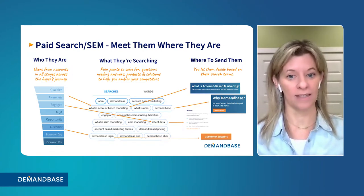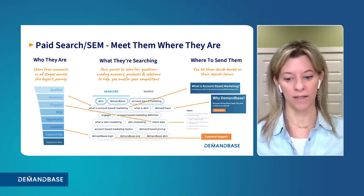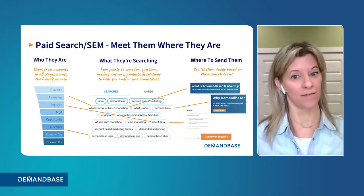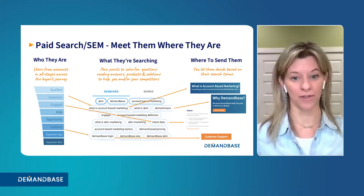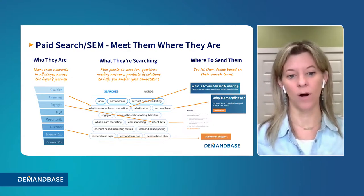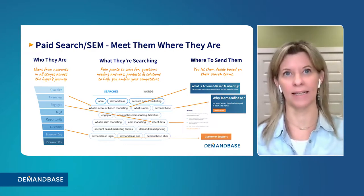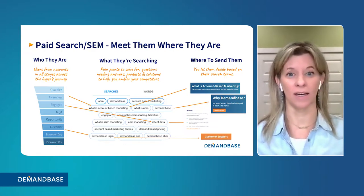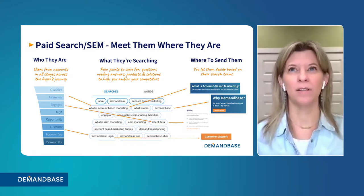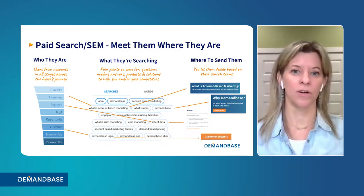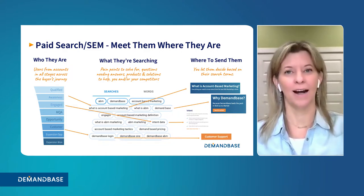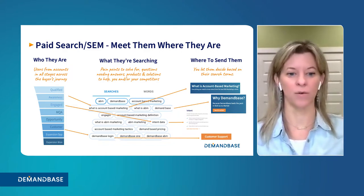All of those things communicate and indicate what level of the buyer's journey stage they're in. The first indicator is the actual search term they use. An account that's qualified or possibly aware but not yet engaged may be searching things like 'stalled revenue growth' or 'B2B go-to-market help,' rather than something like 'how can account-based marketing help me.'